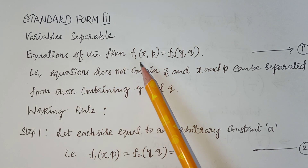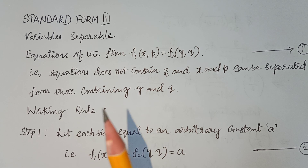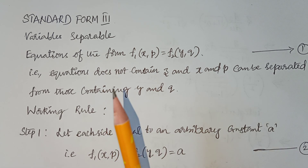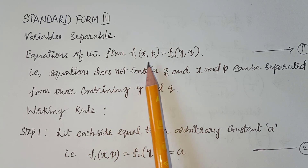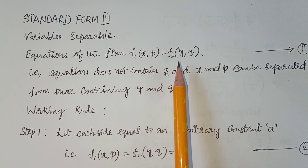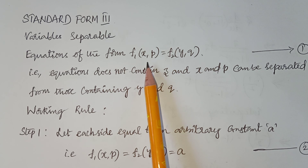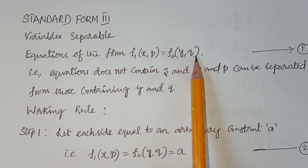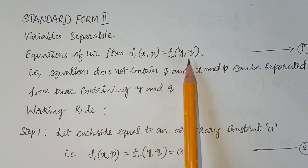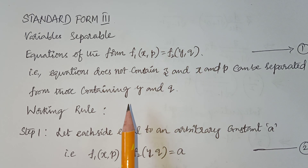The equations of the form f1(x, p) = f2(y, q). That means the equations contain x, y, p, q terms, and remember they should get separated like x, p on one side and y, q on another side. Only then do we follow this working rule.